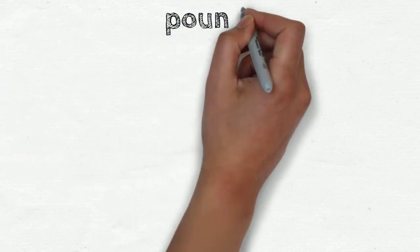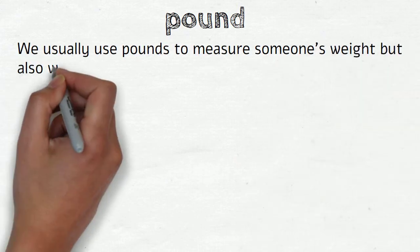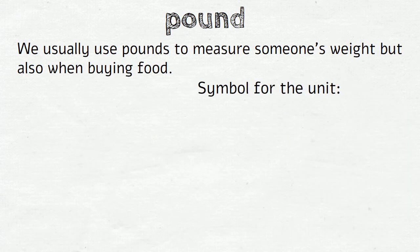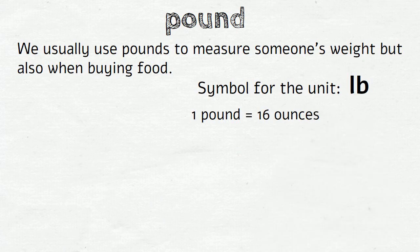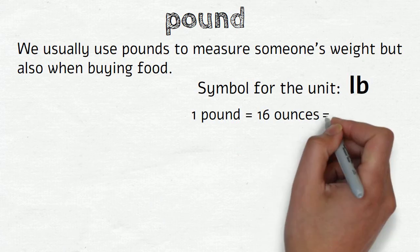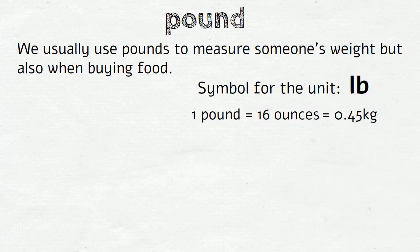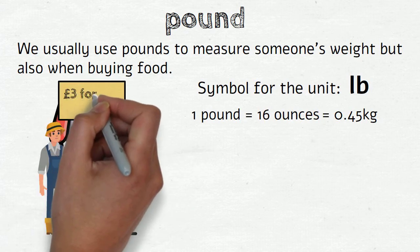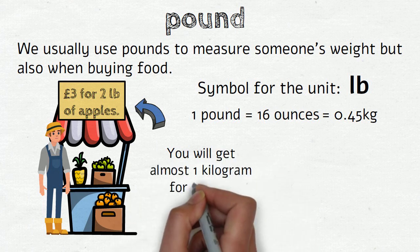Pounds. We usually use pounds to measure someone's weight but also when buying food. The symbol for this unit is lb. 1 pound equals 16 ounces. It also equals 0.45 kilograms in a metric system. So if you see a label saying '3 pounds for 2 pounds of apples,' it means that you will get almost 1 kilogram for 3 pounds.